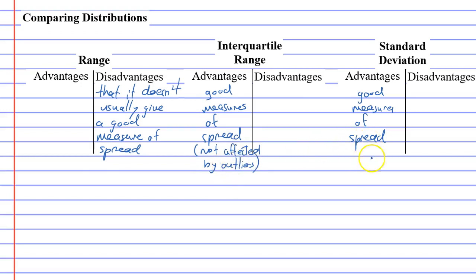So what's the advantage of range? Quick and easy. It's quick and easy, but quite often is useless. Interquartile range, long and tedious to do. Same for standard deviation. It's long and tedious. That's its disadvantage.